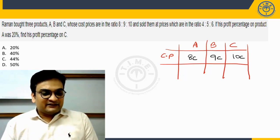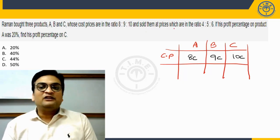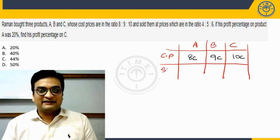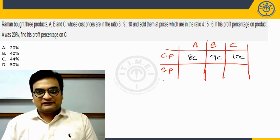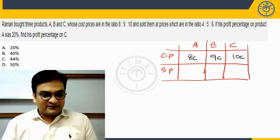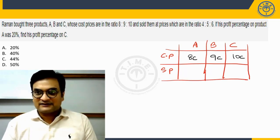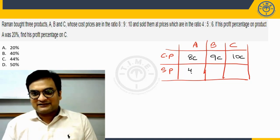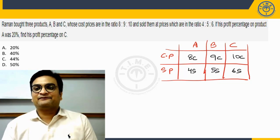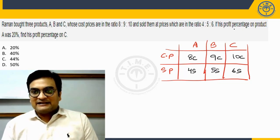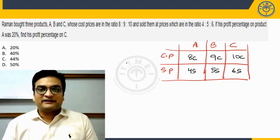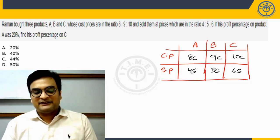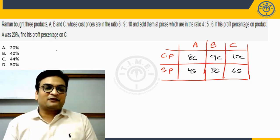Next he says and sold them at prices which are in the ratio 4, 5, 6. So this is the selling price information. The ratio is given to us as 4, 5, 6. So let's assume the selling prices are 4S, 5S, and 6S. Now, then he says if his profit percentage on product A was 20 percent, so here he made 20 percent profit. Find his profit percentage on C.